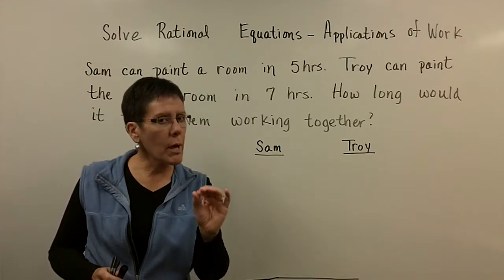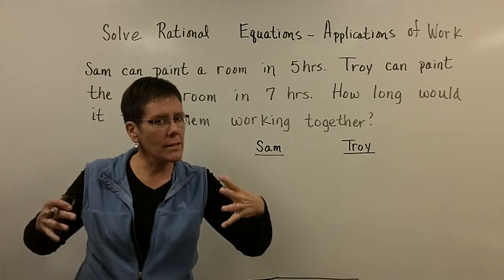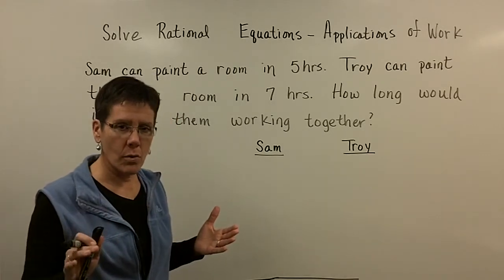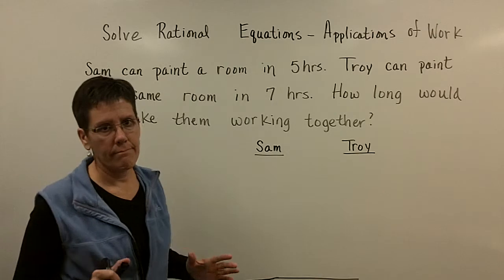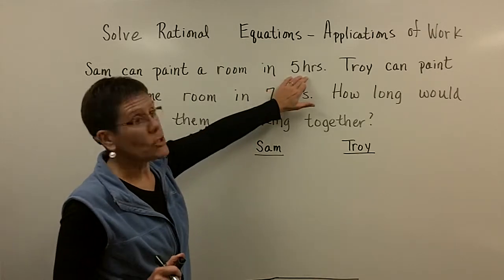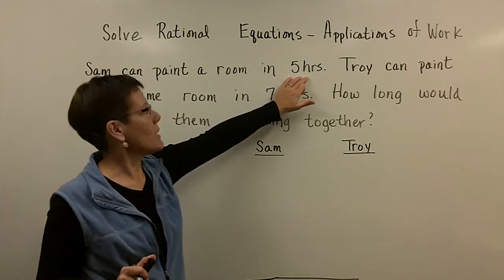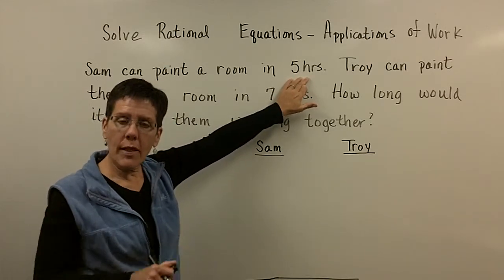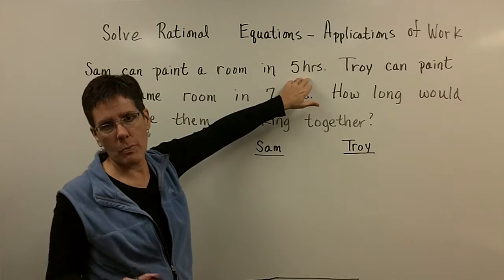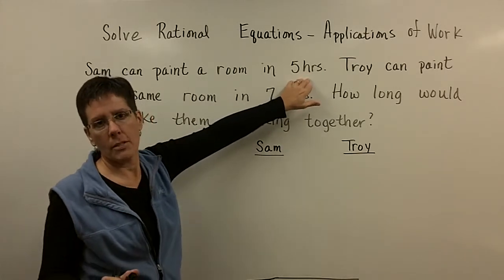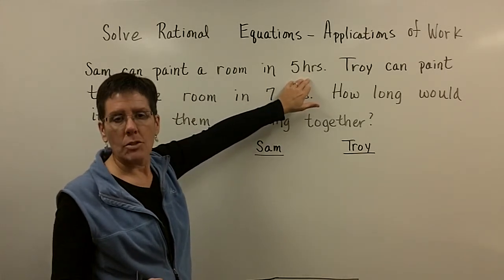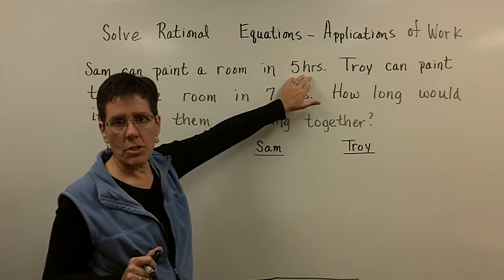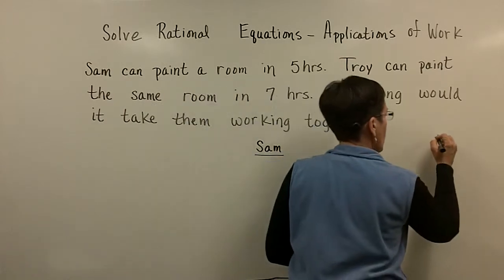Would you think about it? So we're just going to think about this problem before we do the algebra. Let's process and get familiar with it. Would you pretend that you could clone Sam? You could make another Sam. And so if you had two Sams working together, and individually they can paint the room in five hours, wouldn't they be able to finish that in two and a half hours, barring that they bump into each other all the time and slow themselves down? But two people at the same rate, if one did it in five, couldn't they finish it in two and a half hours? Let's just write that down. Two and a half hours.